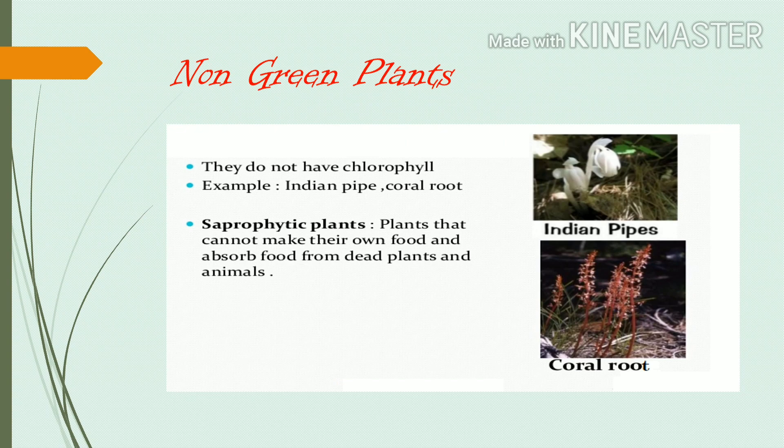Non-green plants. Non-green plants do not have any chlorophyll, so they are not green in color. Examples are Indian pipe and coral root. Saprophytic plants are those that cannot make their own food, so they grow on the remains of dead plants and animals to absorb food from them.